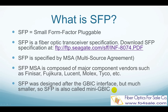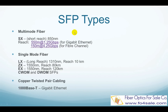SFP modules can be classified based on their working wavelengths and working distance. For multi-mode fibers, the SFP module is called SX. SX modules use 850 nanometer wavelength. The distance that SX modules support depends on the network speed. For 1.25 gigabit per second, the reach is about 550 meters. For 4.25 gigabit per second, it supports up to 150 meters.